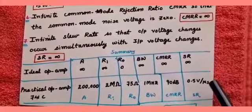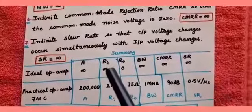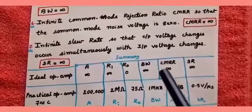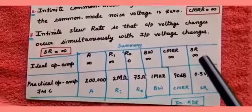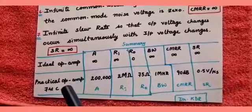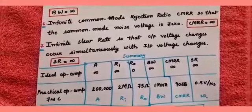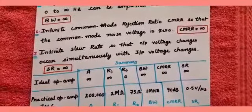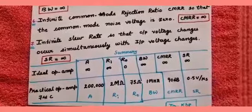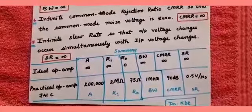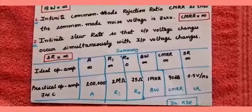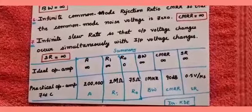I hope the summary is clear. To recap: for an ideal op-amp, gain is infinity, input resistance is infinity, output resistance is 0, bandwidth is infinity, CMRR is infinity, and slew rate is infinity. In this class we have learned how to define the characteristics of op-amp, their symbolic notations, definitions, characteristics of an ideal op-amp, and finally the summary of ideal op-amp values versus practical op-amp values.